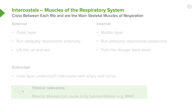The intercostals cross between each rib and are the main skeletal muscles of respiration. The external ones, the outer layer, run obliquely downwards and anteriorly. When they contract, they lift the ribs up and out and expand the chest, and they are one of the main drivers of inspiration.